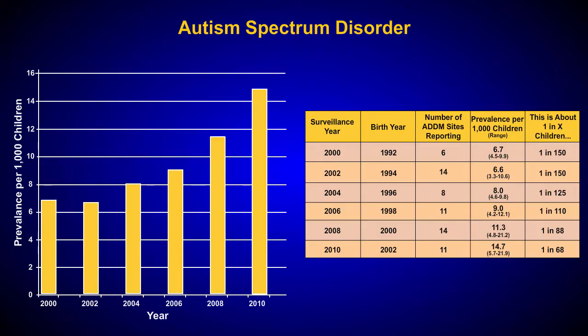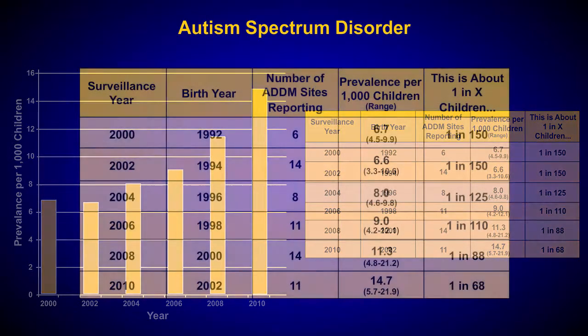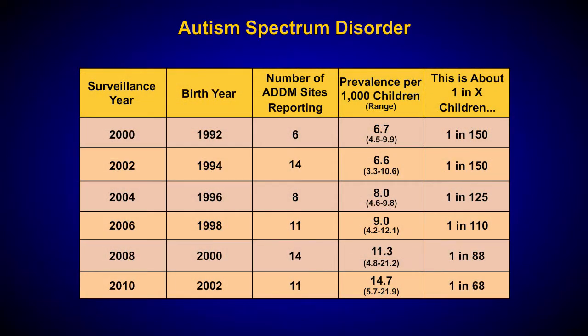For example, the data shown in this table describe the prevalence of Autism Spectrum Disorder, or ASD, a neurodevelopmental disorder that can affect social, behavioral, and cognitive development.